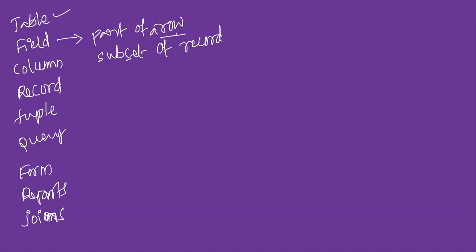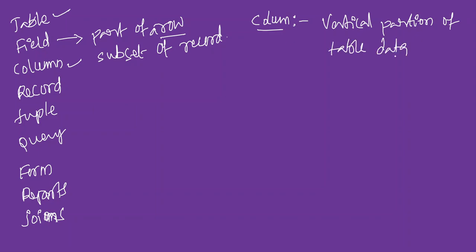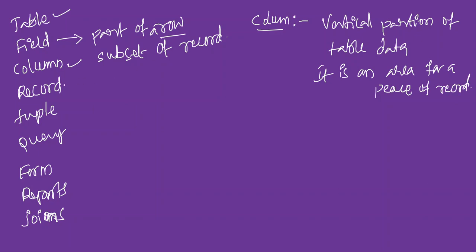The next topic is column. A column is the same as a field heading, or a vertical partition of table data. So the vertical partition of a table is called a column. It is also an area for a piece of a record.